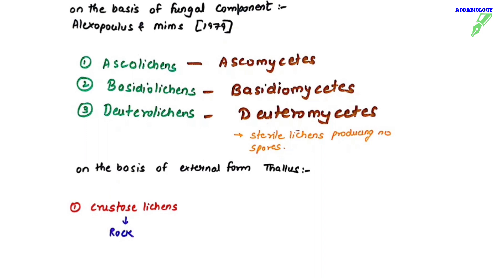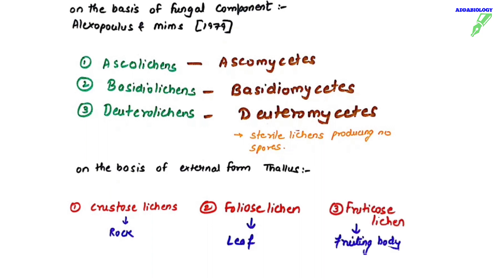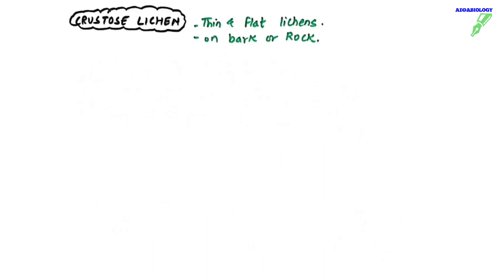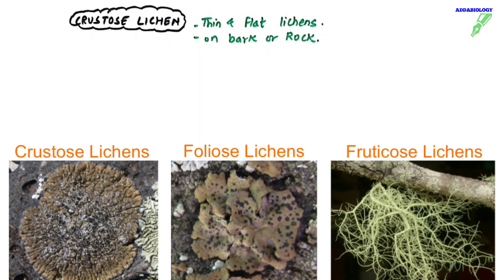Based on thallus, we have three types of lichens. First, crustose lichens — the word crustose means rock, so they grow on rock with a rocky appearance. They are thin and flat lichens that mostly grow on bark or rock. Examples of crustose lichens are Graphis, Lecanora, and Haematoma.